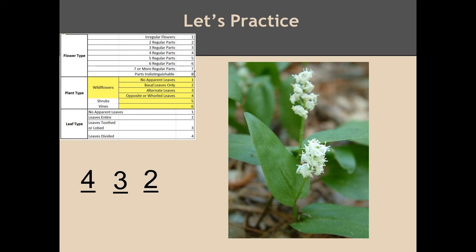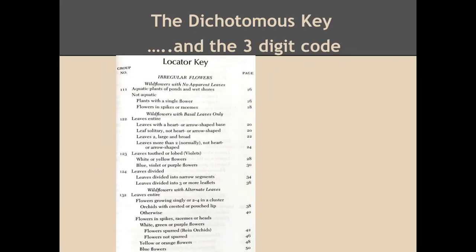Now that you are familiar with determining the three-digit code, it's time to introduce the dichotomous key. After the glossary, you will find a page with the title 'Locator Key' at the top. On the far left of the page is a column of numbers listed under group number — these are the three-digit codes. On the right side of the page are the page numbers. In the middle are descriptions in which you have to walk through and make a choice.